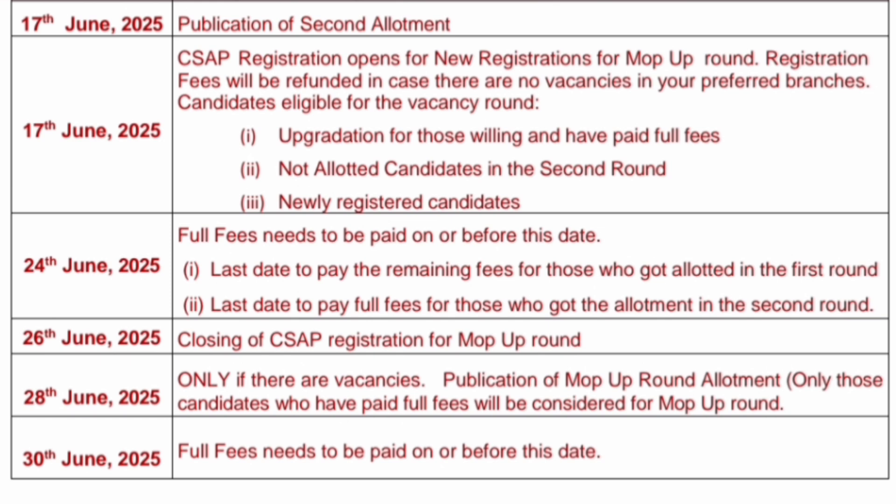24th June is the last date to pay the full fees — both for students who got seats in round 1 and round 2. By 24th June, all first and second round students should pay the complete fees. 26th June is the closing of CSAP registration for the mop-up round. 28th June is when the mop-up round allotment results are published. 30th June is the deadline to pay full fees for mop-up round allotted candidates — only two days are given.